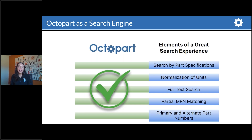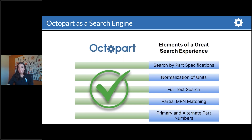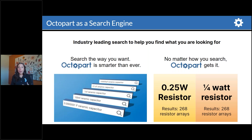Another thing we're really known for in the industry is our best-in-class search engine. Whether you're searching by a full or partial part number because you already have your list and you're working down it to make buying decisions, or you want to search by part specification — you haven't narrowed down the part number or brand yet, but you know what you need that part to do or the tolerances it needs to exist within — you can search any of those ways on octopart.com and get a really seamless experience. We also normalize our units so that whether you're searching by decimal place or fraction, by abbreviated unit or full spelled-out unit, you're going to get the same search results. Our goal is to help you find what you're looking for and ultimately increase efficiency.